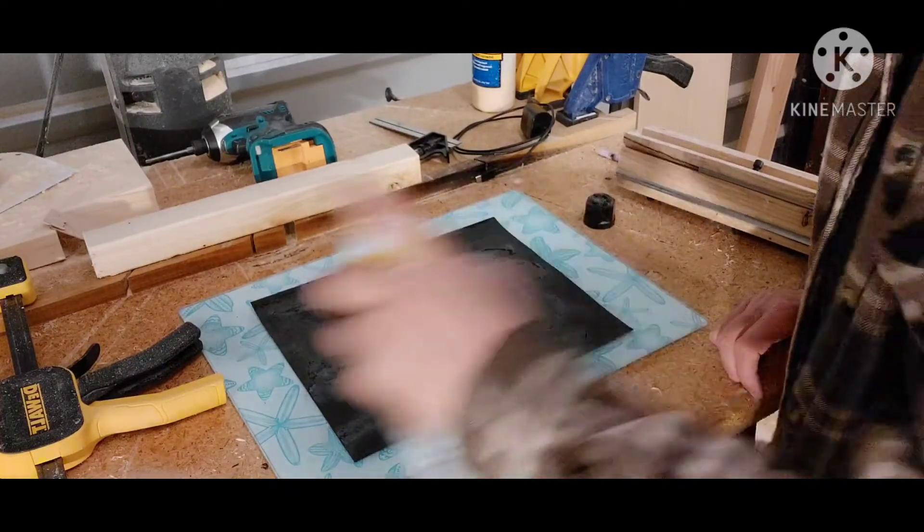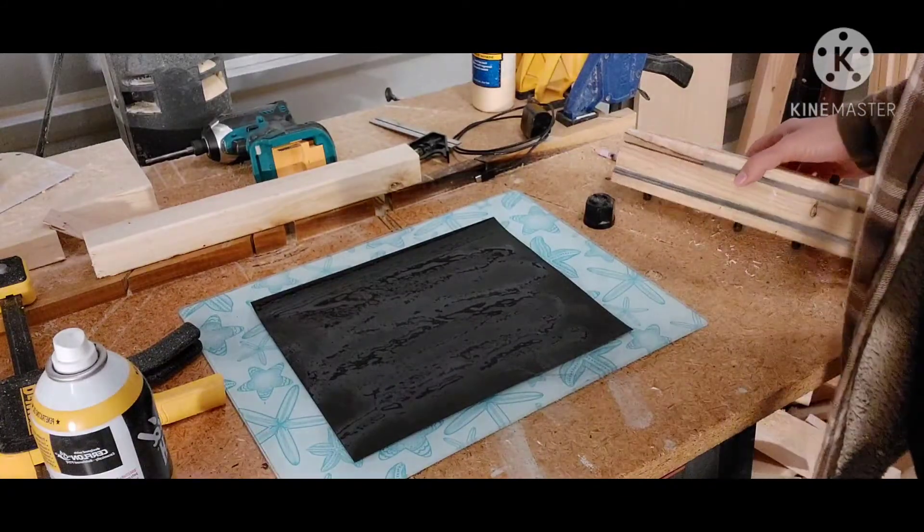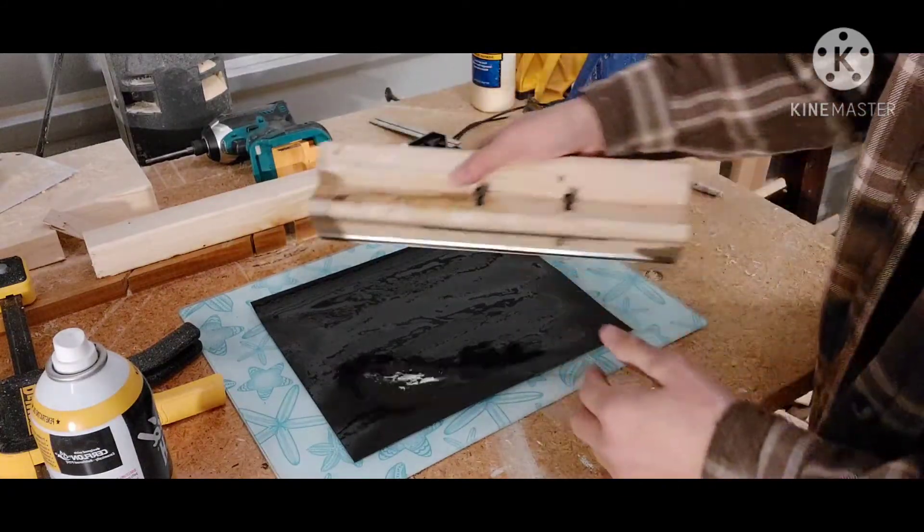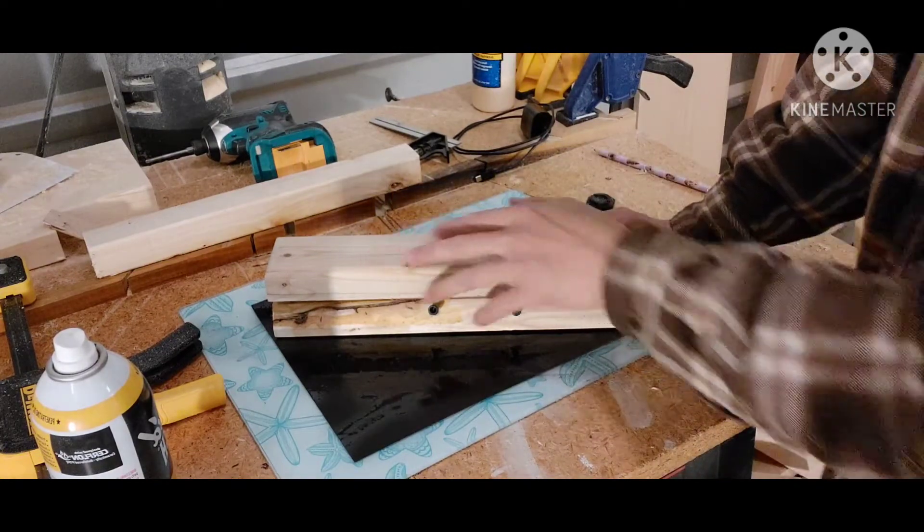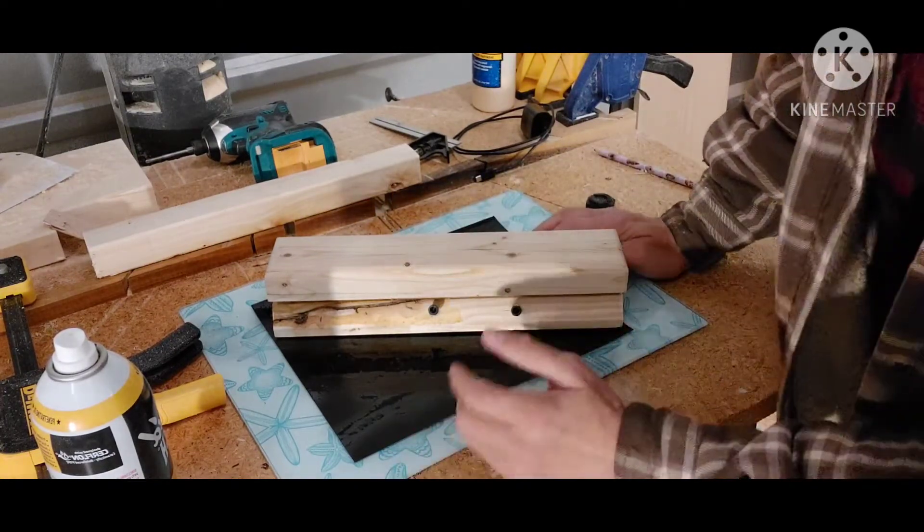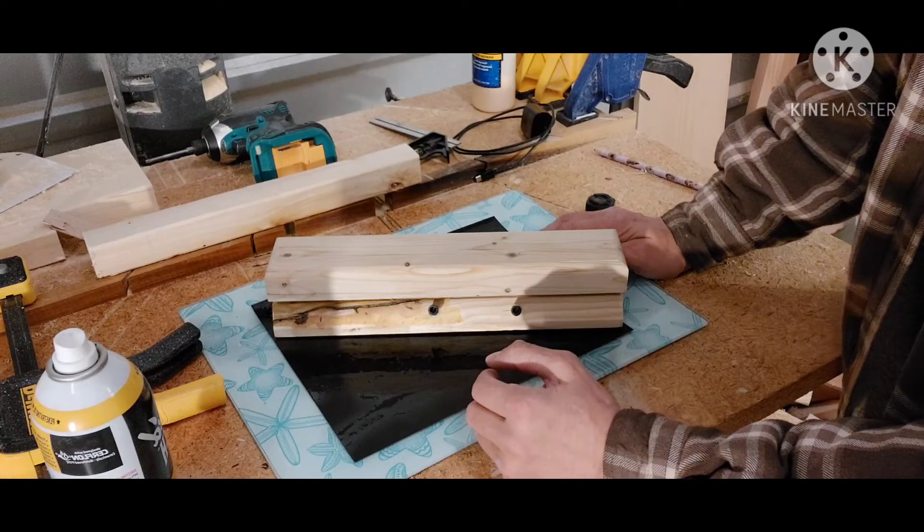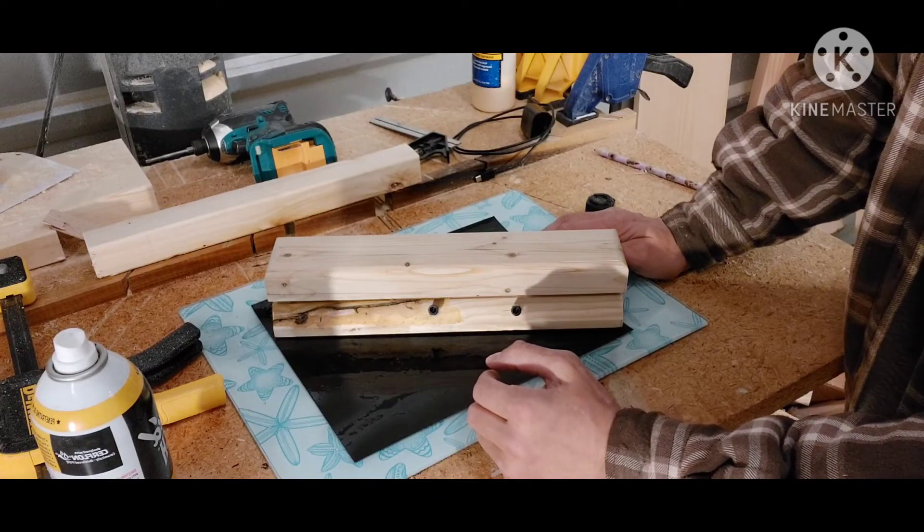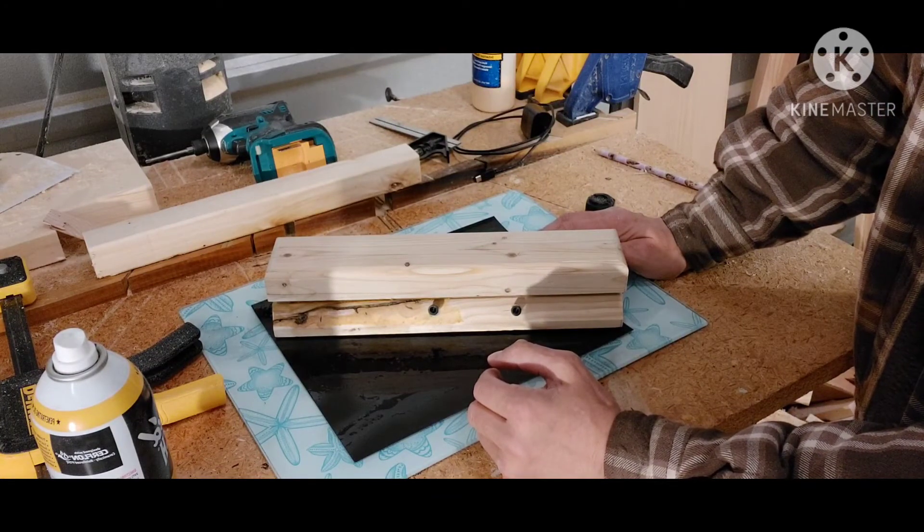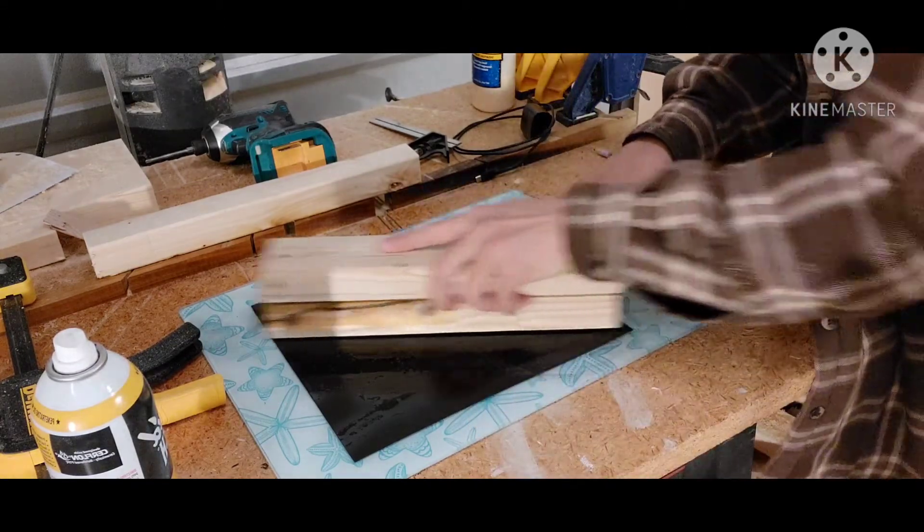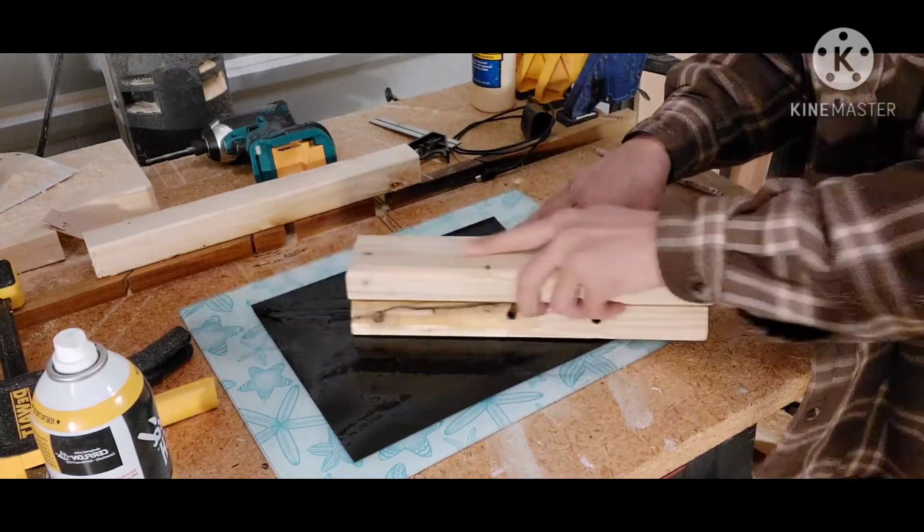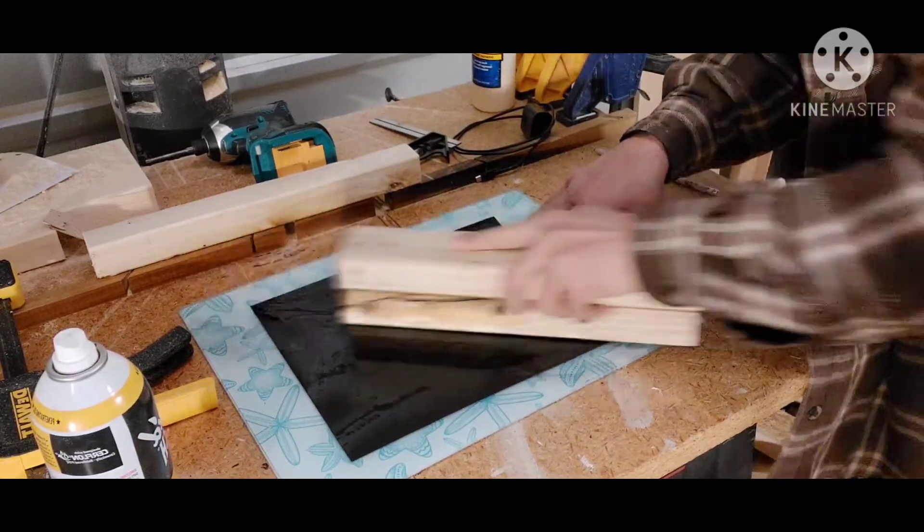Now this is 600 grit. Mine doesn't need a whole lot of sharpening, but if I wanted to really give it a good sharpening, you need to start it off with maybe like a 200 grit sandpaper, and you work your way up probably to about a thousand or 1200 grit. So anyways, all you do is go back and forth, back and forth.